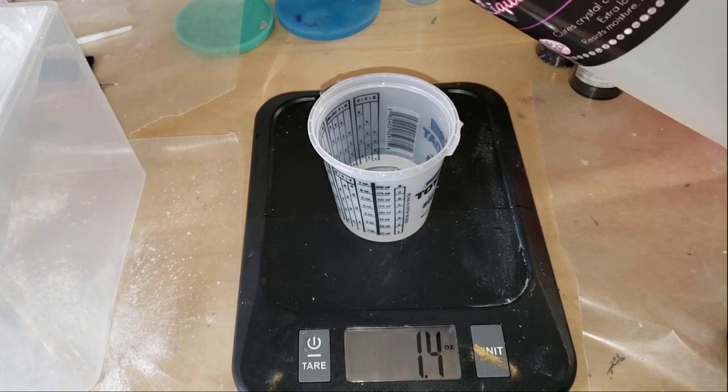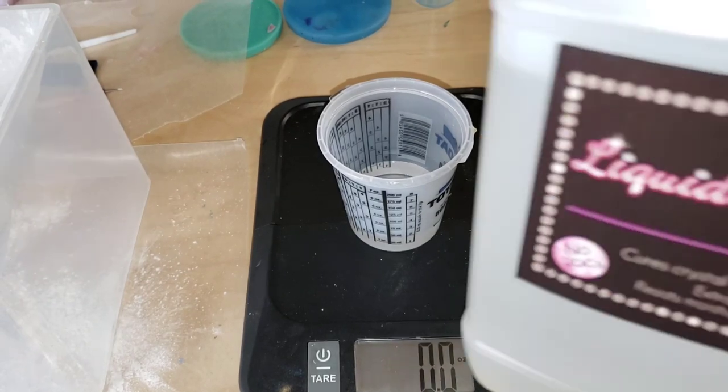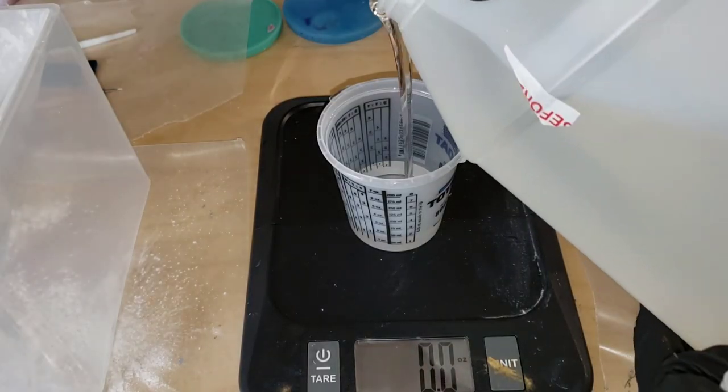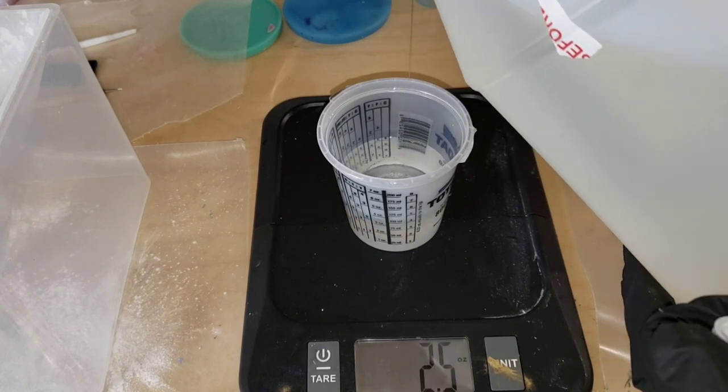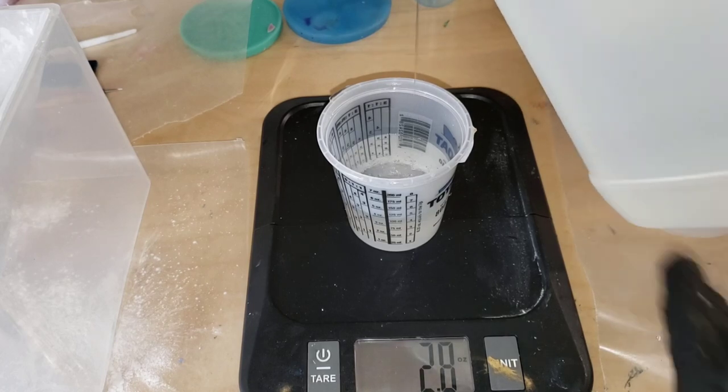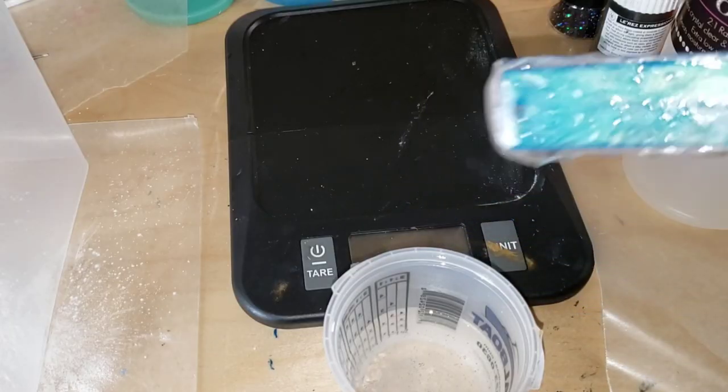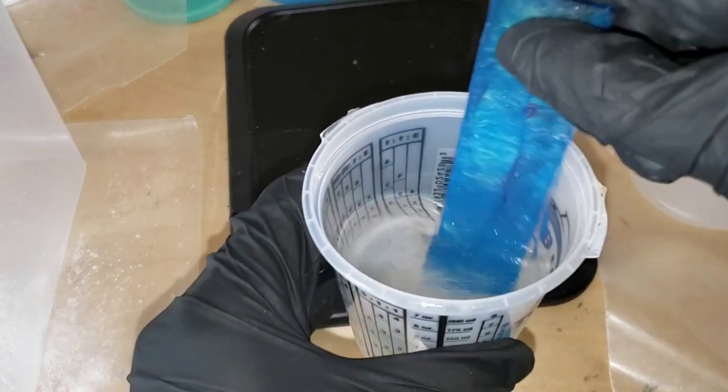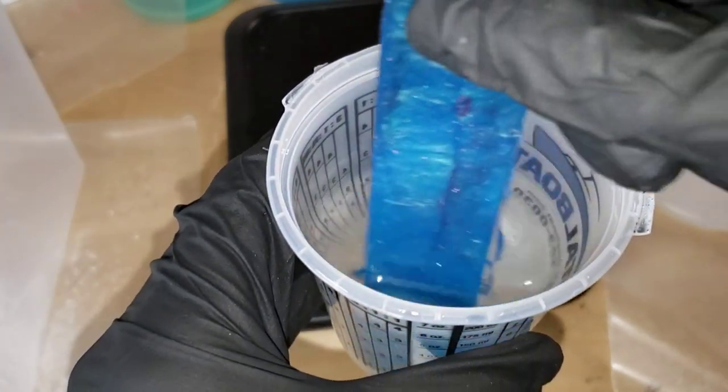Here's my Liquid Diamonds resin. I'm going to be mixing up 1.4 ounces of my Part B and 2.8 ounces of my Part A. This is a two-to-one ratio resin, so you need two parts Part A and one part Part B.